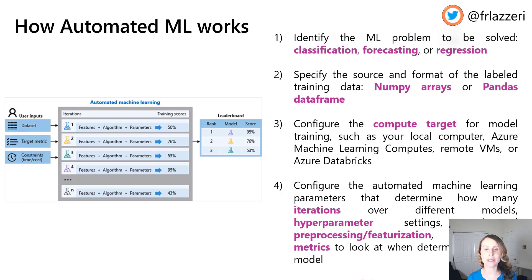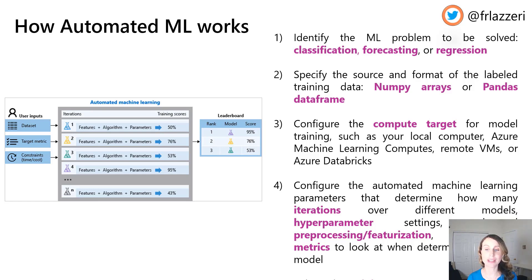Let's now see how automated machine learning really works. First, you have to identify and specify the machine learning problem that you want to solve — is it a classification, forecasting or regression problem? Then you have to specify the source and the format of your labeled training data; it can be NumPy arrays or a pandas DataFrame. Third, you need to configure the compute target for model training, such as your local computer, Azure Machine Learning compute, remote VMs, or Azure Databricks.